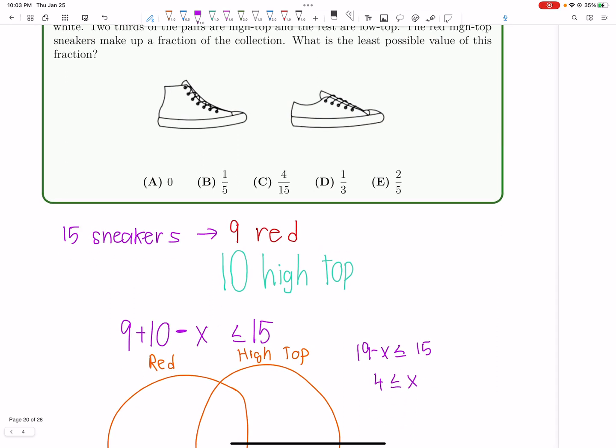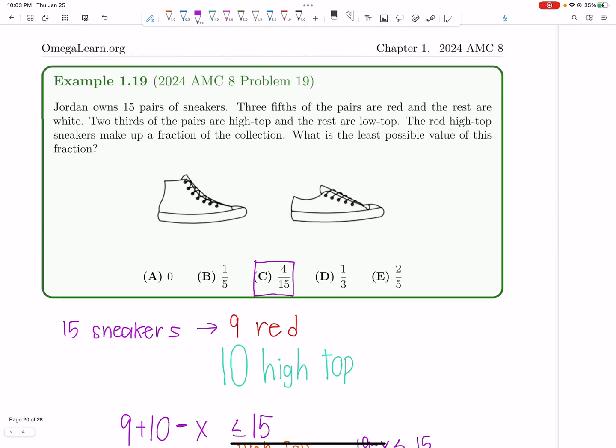And of course, we're trying to minimize it. So 4 is the least possible number of shoes. And therefore, 4 over 15 is the least fraction because there's 15 total pairs.